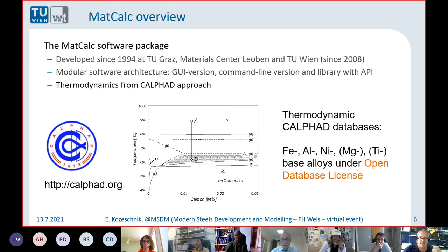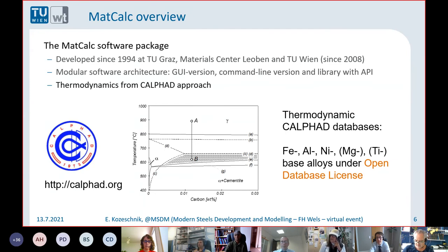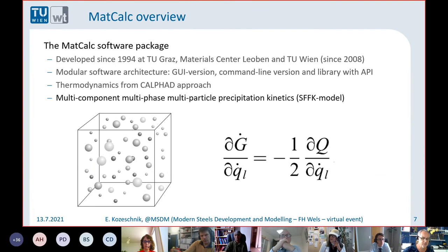One of the things that makes Matkak very flexible is the fact that we are using CALPHAD databases. We have worked on that for more than 10 years now, and there are three types of databases available under the open database license. You can download them from the Matkak webpage. The open database license is a very nice one because it says you can use the database, you can modify it as much as you want, and the only thing you have to do is mention who was the first to publish it. That should actually work also with OpenCalphad.